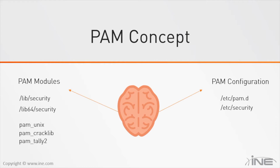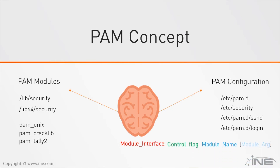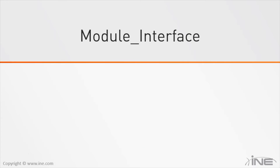As explained before, each application has its own configuration file, and each configuration file contains a stack of several modules to get the job done. The configuration file has the same name as the service. For example, the file for sshd would be /etc/pam.d/sshd, and the file for the login application is /etc/pam.d/login. The configuration file has a standard format: each line starts with a module interface type, then a PAM control flag, then the module name, and any module arguments. The first field is the module interface.